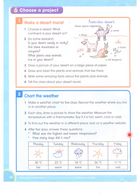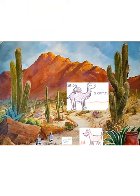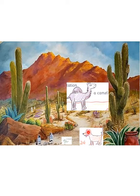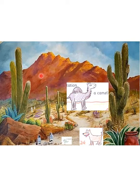I will give you a hint. This is a desert mural. I have made one with a camel. This is a coyote and lizard. There are some birds, and this is cactus, right? And there are some rocky mountains here. So you can make a desert like this on a large piece of paper. You will name it and write some facts over here, okay?